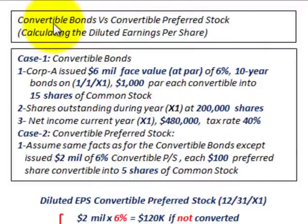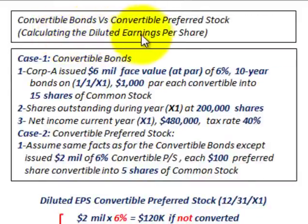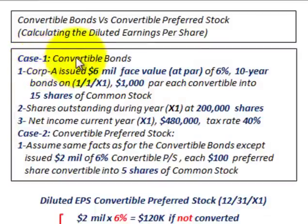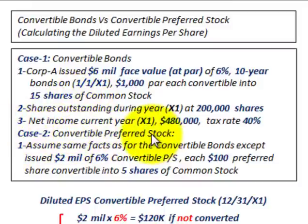What we're going to be going over here are convertible bonds versus convertible preferred stock, and we're going to be calculating the diluted earnings per share for each of these. We're going to have two cases: case one will deal with convertible bonds, and case two will deal with convertible preferred stock.